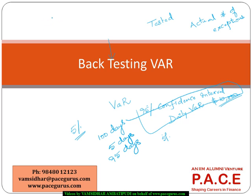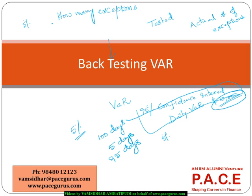What is primarily looked at is: as per our VAR model, how many exceptions are possible? What do we mean by an exception here? Losses beyond the VAR limit. Whenever I say 95% confidence interval, 5% are exceptions. When I say 99% confidence interval, 1% of the observations are exceptions. So as per my model, these many exceptions are possible.